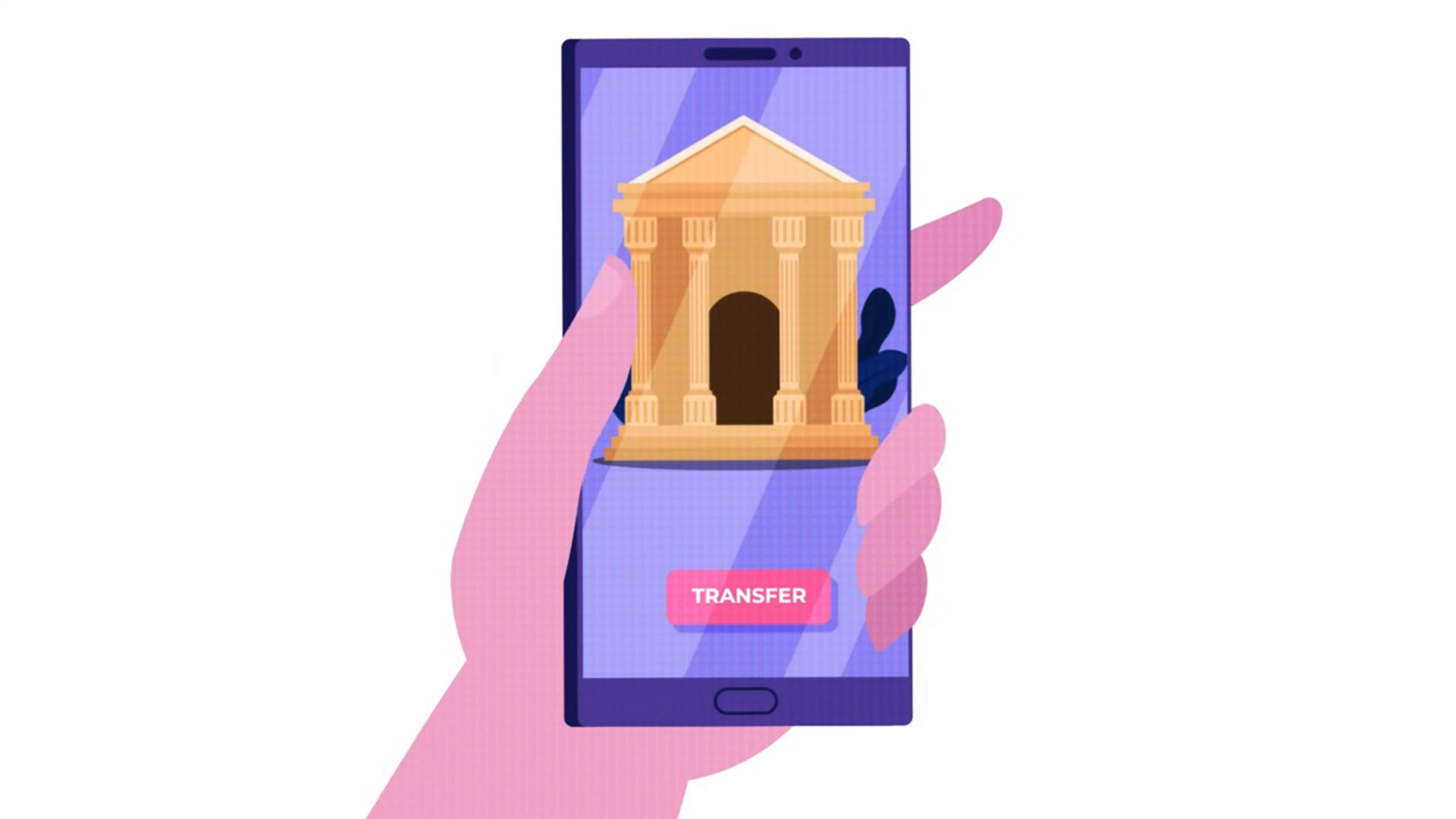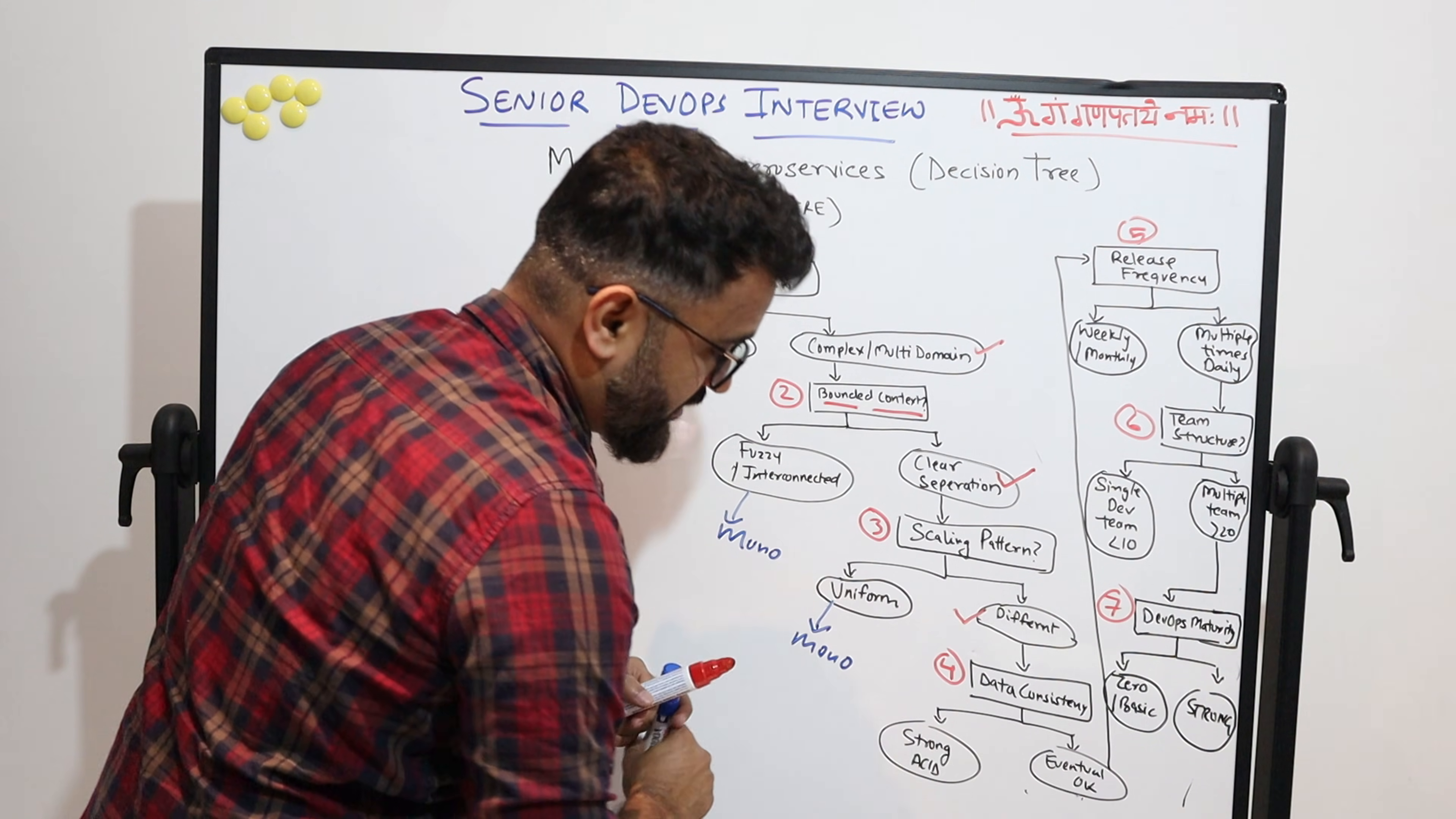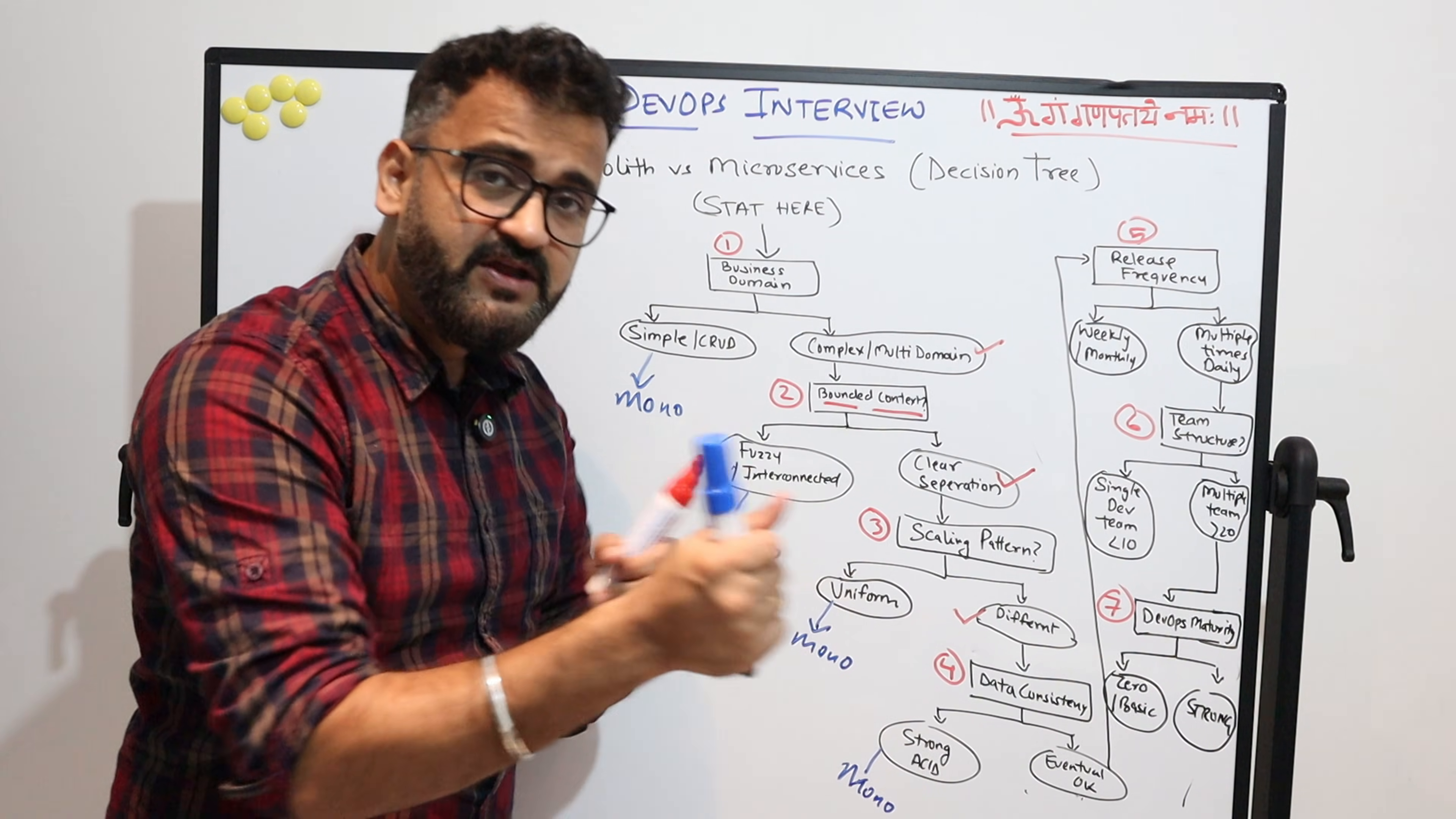Then you will come to a very important point which is data consistency because that plays a huge role in your decision. If it is a banking application or an application which is very strongly coupled and needs ACID transactions, then it leans towards being a monolith.